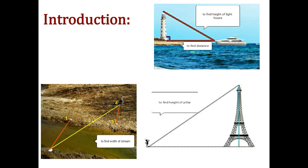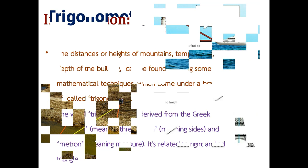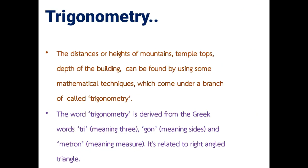Introduction: As you can see in this diagram, if you want to find the height of this light pole, or to find the distance of the light pole and the board, or if you want to find the width of this stream, or to find the height of this pillar, we need some mathematical principles. These principles come from a branch of mathematics called trigonometry.